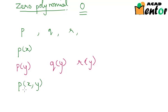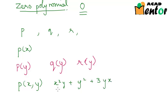An example of a polynomial in both x and y would be x squared y plus x squared plus y squared plus 3yx. This is a polynomial in both variables x and y. However, in this chapter we will focus only on polynomials in one variable — that could be y, x, z, or any variable, but just one variable.